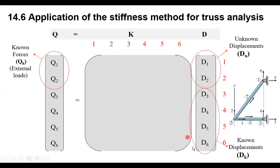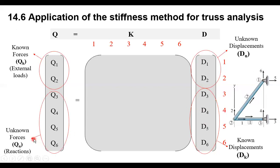For other displacements, they will be known displacements (D-known), because from D3 until D6 they are all at pin supports, so no displacement occurs at 3, 4, 5, or 6 — I know they will be zero. On the other hand, Q3 to Q6 will be unknown forces, called Q-unknown, because they are external reactions. We need to find them later.